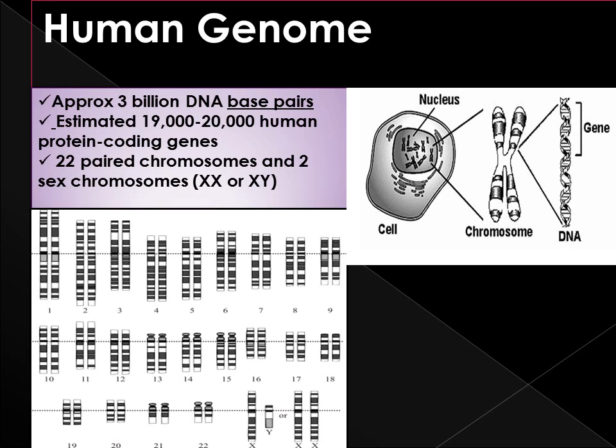To identify any changes in the genome, like loss or gain of any segment, we need to open up the nucleus, take out the chromosome, and search for that aberration. Chromosomes cannot be seen with the naked eye, but if they are stained and seen under a microscope, it is possible to see that each one has a distinctive pattern of light and dark bands that look like horizontal stripes.